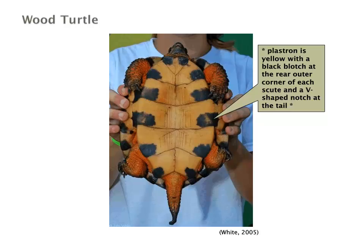Notice the orange present on the limbs and the tail. The plastron is yellow with a black blotch only at the rear outer corner, and with a V-shaped notch at the end of the tail.